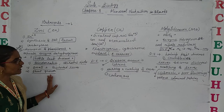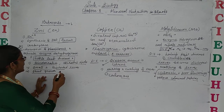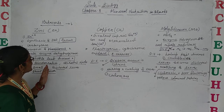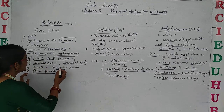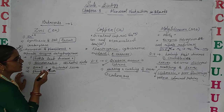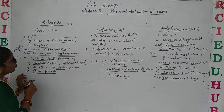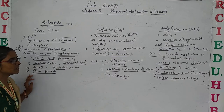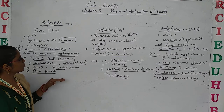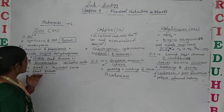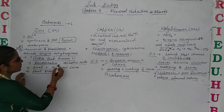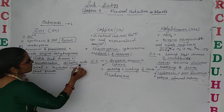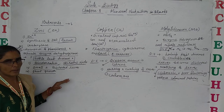Discussing the deficiency disease of zinc: one is Little Leaf Disease, which is the main deficiency symptom of zinc. In this disease, discoloration of the leaves occurs — the green color of the leaves decreases day by day and they become yellowish, showing chlorosis. As well as necrotic spots also appear on the leaves.